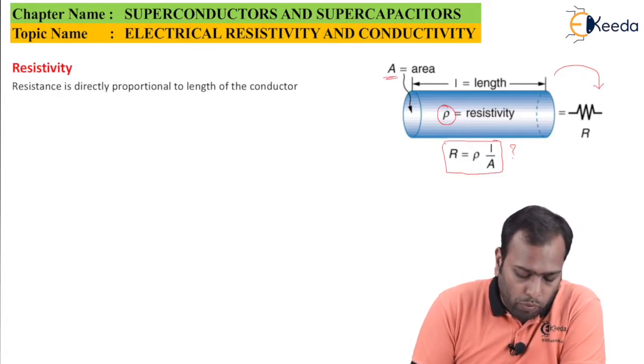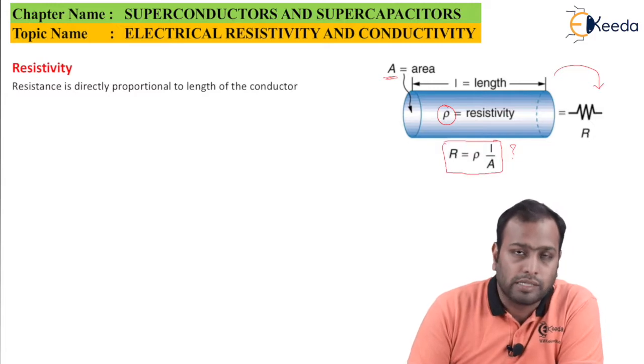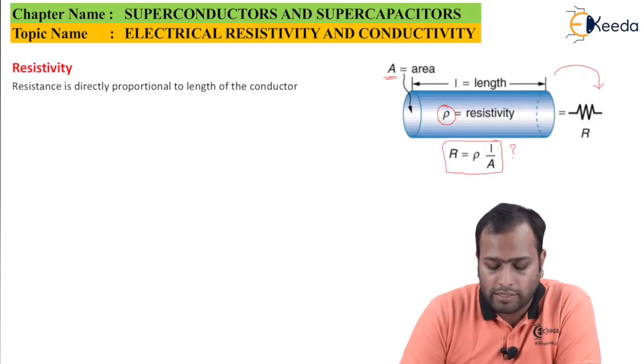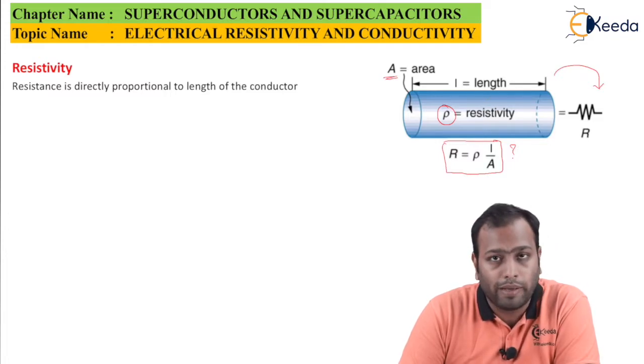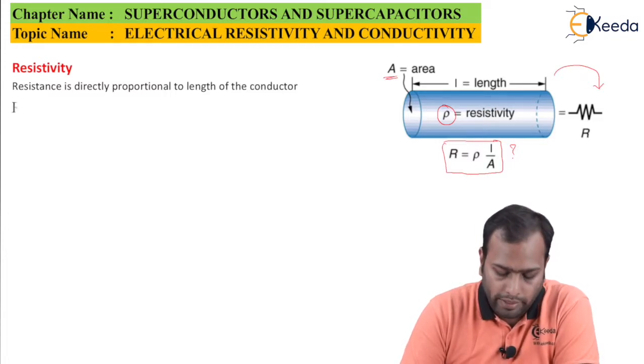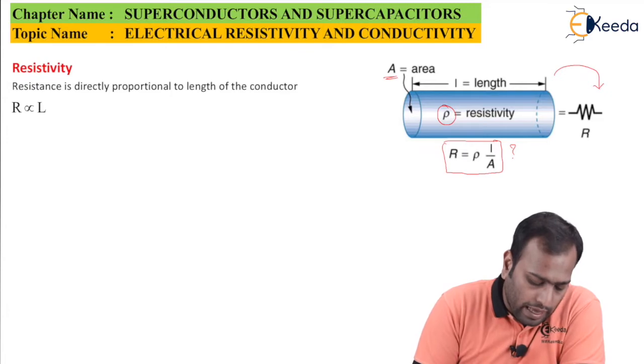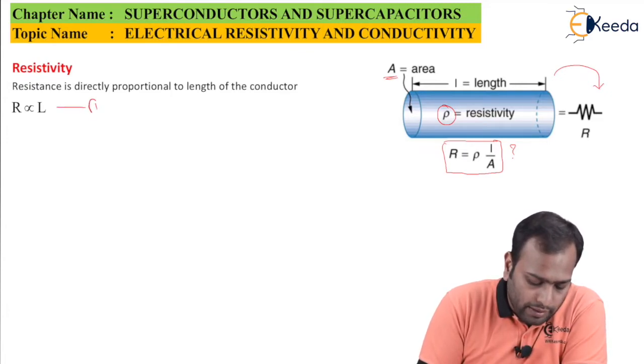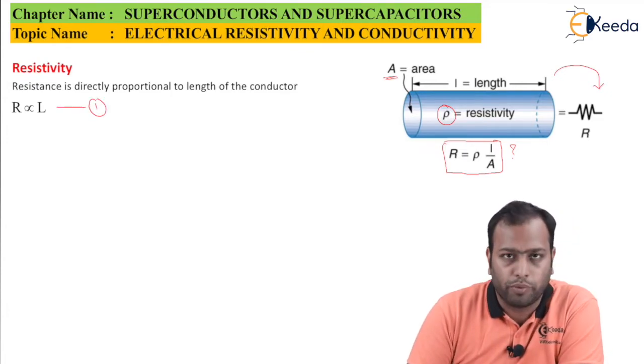Resistance is directly proportional to the length of the conductor. This is the first fact that we know. As the length of the conductor increases, the resistance to my current is also going to increase. So my first equation is R is directly proportional to L.